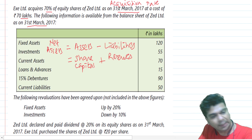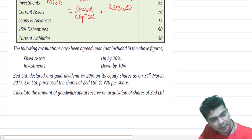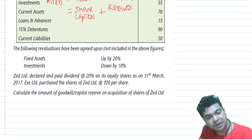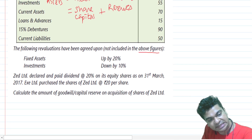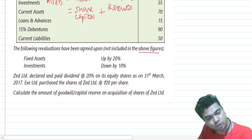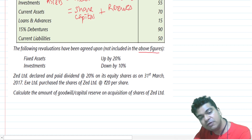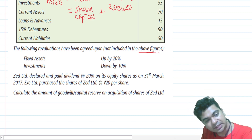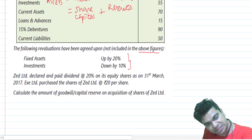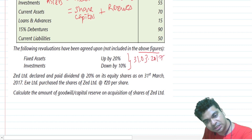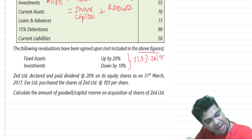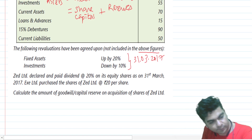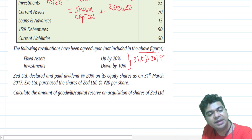Some extra information is provided: the following revaluations have been agreed upon but are not yet included in the above figures. Fixed assets are being increased by 20% and investments are being brought down by 10%. These revaluations are done on the acquisition date, which is 31st March 2017, so when we list the net assets we will give effect to the revaluation.